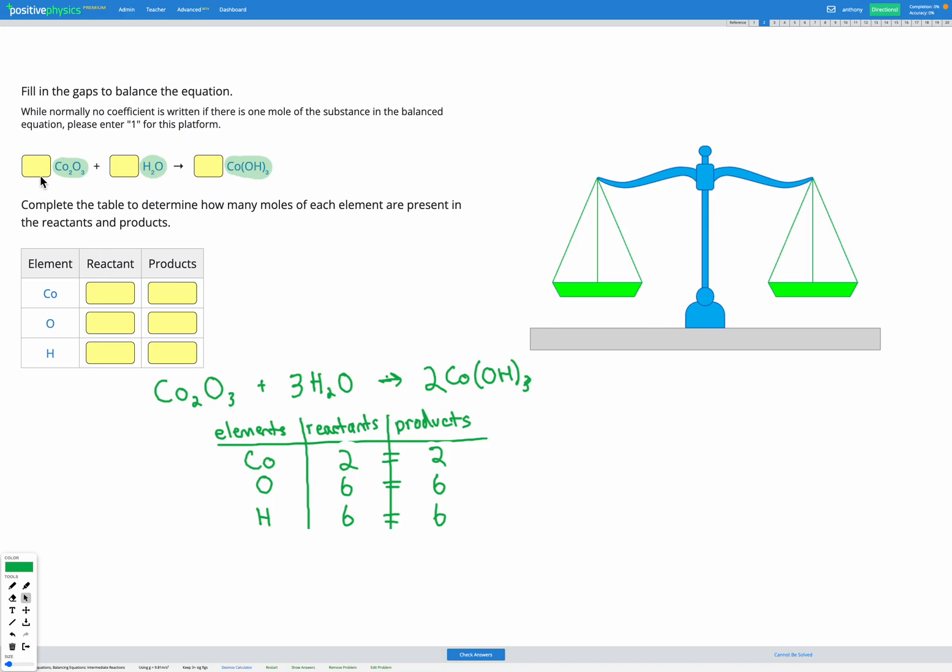So we can go ahead and enter those coefficients up here. We had one set of Co2O3, three sets of H2O, and two sets of Co(OH)3.